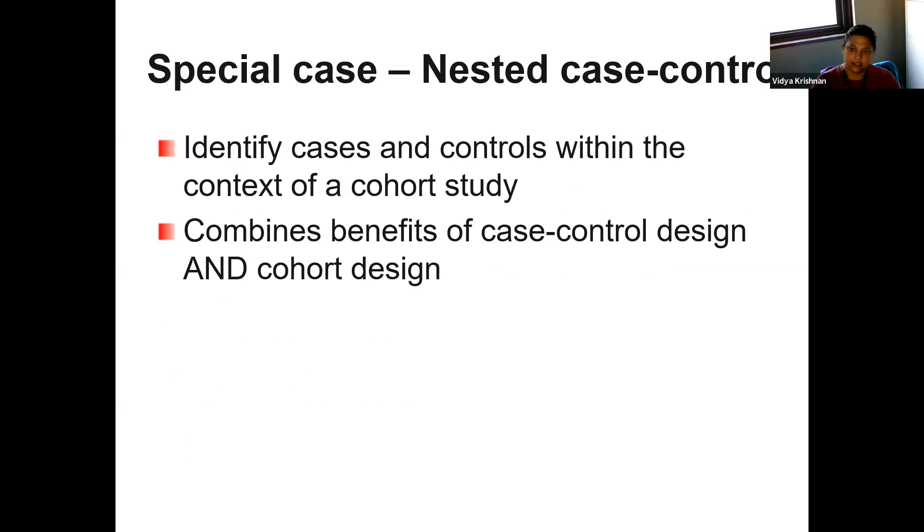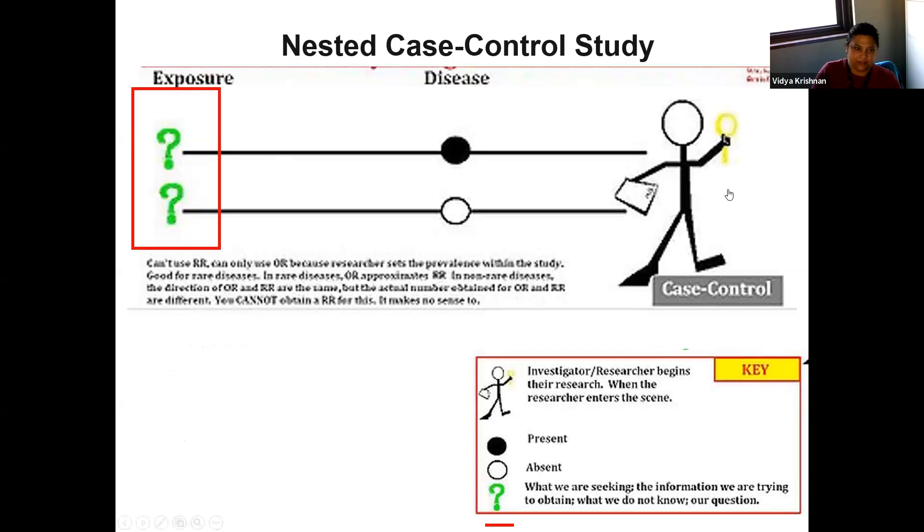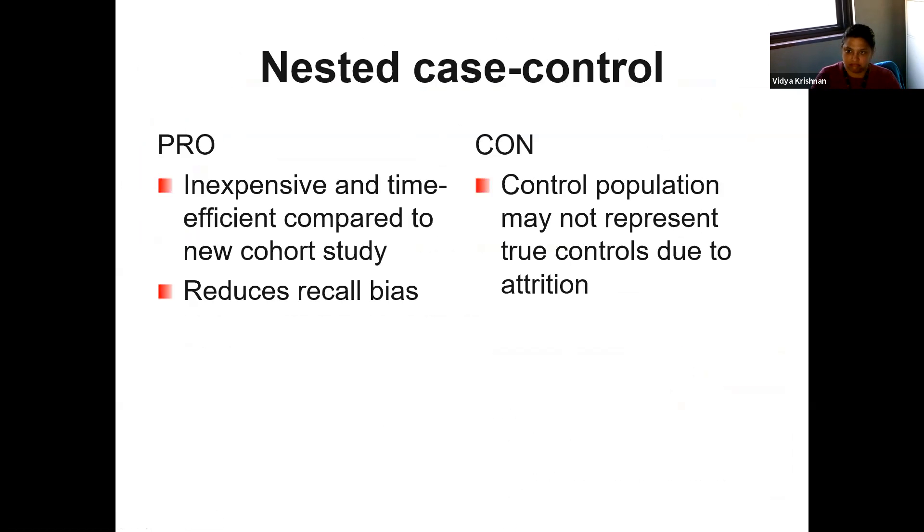Except, of course, the unusual case of the nested case control study, which is basically a combination of the cohort and the case control where you identify the cohort, and then you go back and want to study something else. So maybe in the Wisconsin sleep cohort study that already looked at patients who are obese versus non-obese and their disease of interest was obstructive sleep apnea. Maybe the investigator went back and said, now I want to look at obesity hypoventilation syndrome as the disease of interest, and then go back and look at the exposures that led to obesity hypoventilation syndrome. So it's just another way of repurposing data from a cohort study. So it's really, really, really inexpensive. You already have the data. But the control population may not represent the true controls that you want because of attrition rates.